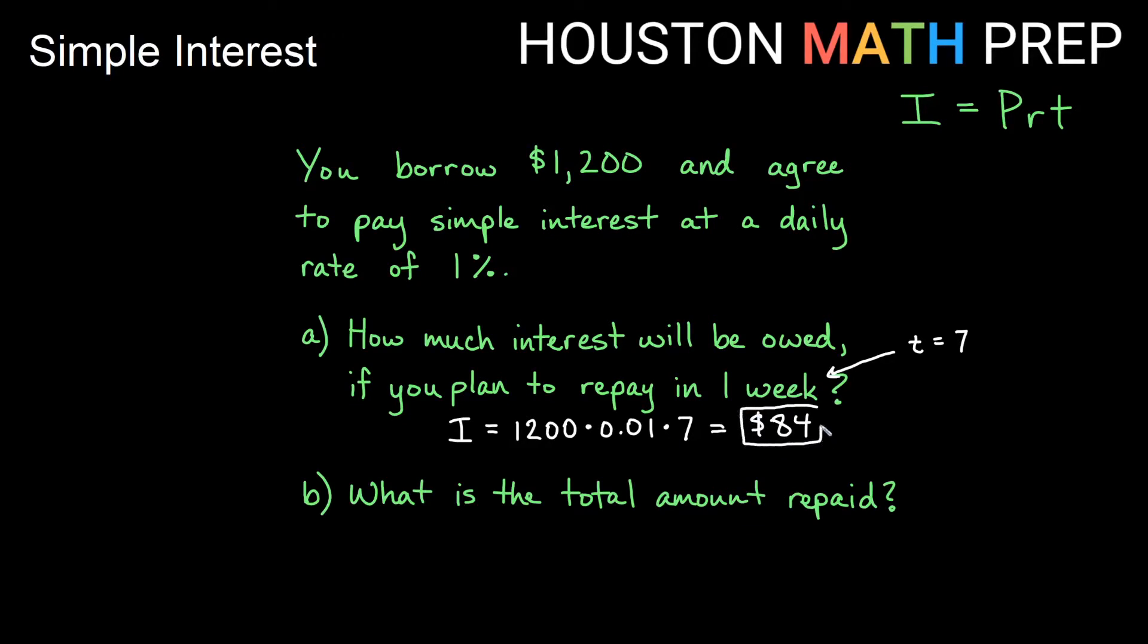And then the other question says, what is the total amount repaid? Well, obviously we have to pay back the original amount, which is the $1,200 that we borrowed, plus we'll also owe them the interest. So we will actually be paying back a total of $1,284 for this loan.